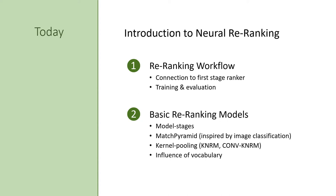Today we're looking at two things specifically. First is the re-ranking workflow and its connection to the first stage ranker, including training and evaluation of neural re-ranking models. Then in the second part we're going to take a look at basic re-ranking models which don't use transformers — models such as Match Pyramid and kernel pooling based models that were developed before BERT, as well as the influence of fixed-sized vocabularies.